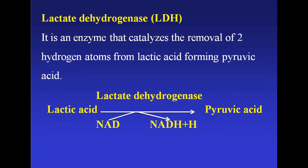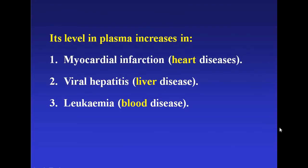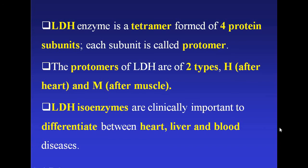Lactate dehydrogenase is an enzyme that catalyzes the removal of two hydrogen atoms from lactic acid to form pyruvic acid. Its level in plasma increases in myocardial infarction, which is a heart disease, viral hepatitis, which is a liver disease, and leukemia, which is a blood disease. LDH enzyme is a tetramer formed of four protein subunits, each called a protomer. The protomers of LDH are of two types: H and M, where H belongs to the heart and M belongs to the muscle. LDH isoenzymes are clinically important to differentiate between heart, liver, and blood diseases.